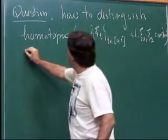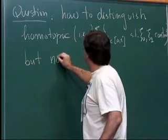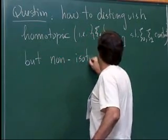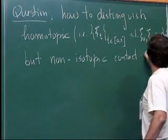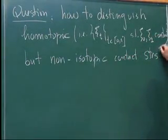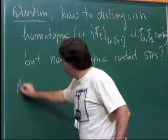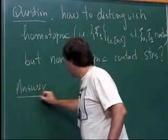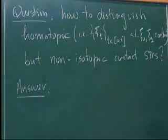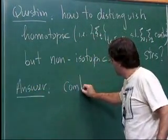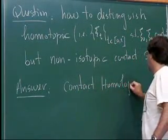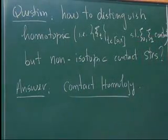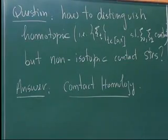From these two results, we can ask: how do we distinguish homotopic but non-isotopic contact structures? Homotopic means you have a family of hyperplane fields on your manifold such that at the endpoints you have contact structures, but in the middle you might not. The answer, for this lecture, is to use contact homology, which is an invariant that can in some situations distinguish homotopic but non-isotopic contact structures.